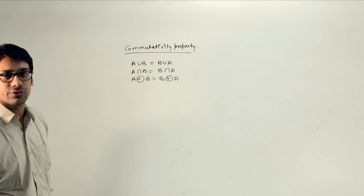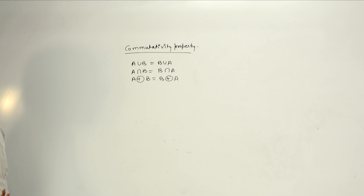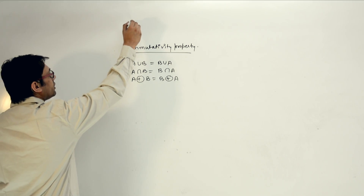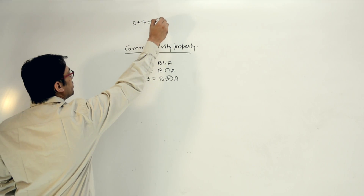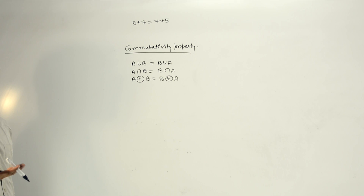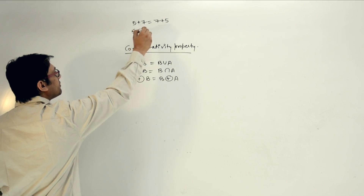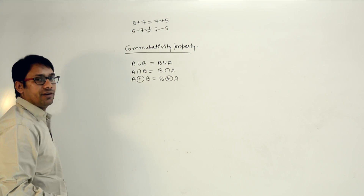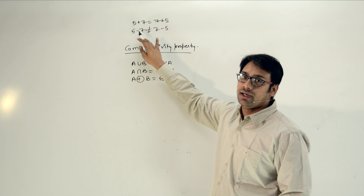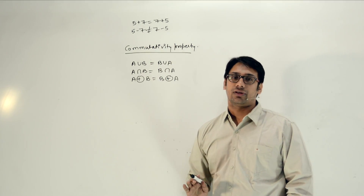Why do we actually need to study this property? In mathematics, if you perform an addition operation between two integer numbers — for example, 5 plus 7 equals 7 plus 5 — the addition operation is commutative. But if you take the subtraction operation, 5 minus 7 is not equal to 7 minus 5, so minus is not commutative. Addition follows the commutative law but subtraction does not.